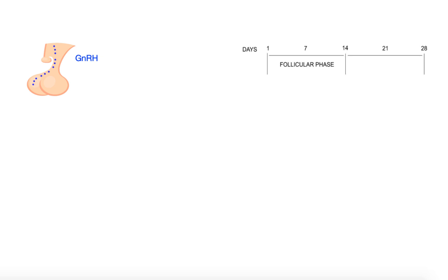GnRH then acts on the anterior pituitary gonadotropic cells and causes them to release two hormones: follicle stimulating hormone, FSH for short, and luteinizing hormone, LH for short. Here we're going to use a graph to illustrate the day-to-day changes of these and other hormones in plasma that play a role in the menstrual cycle.